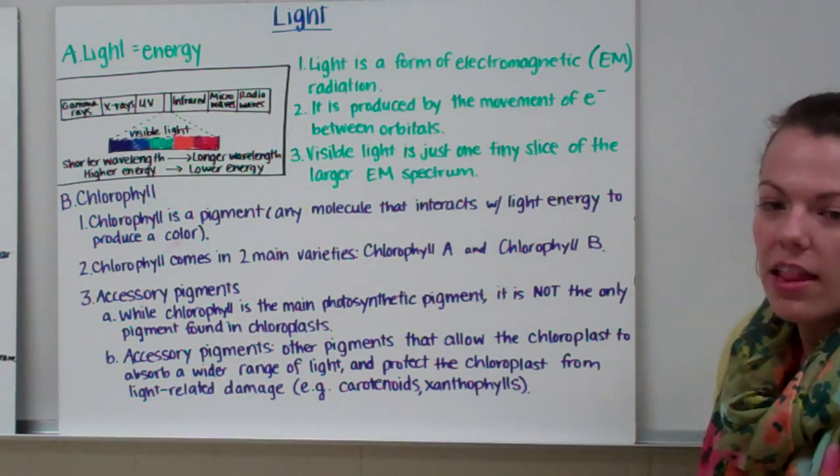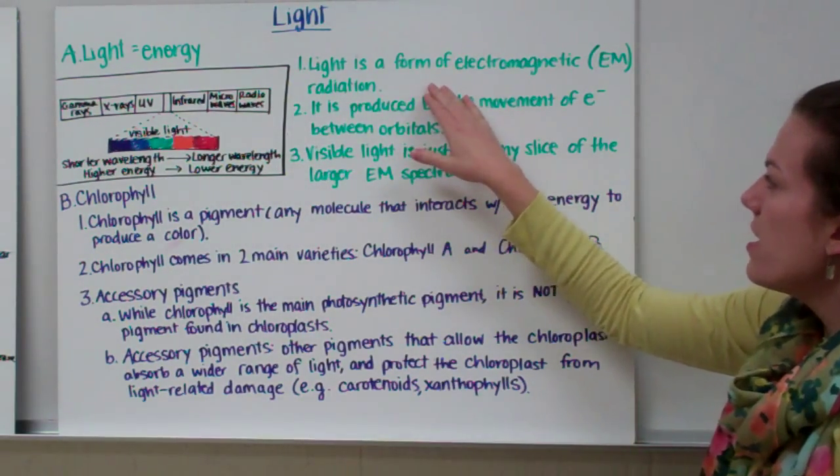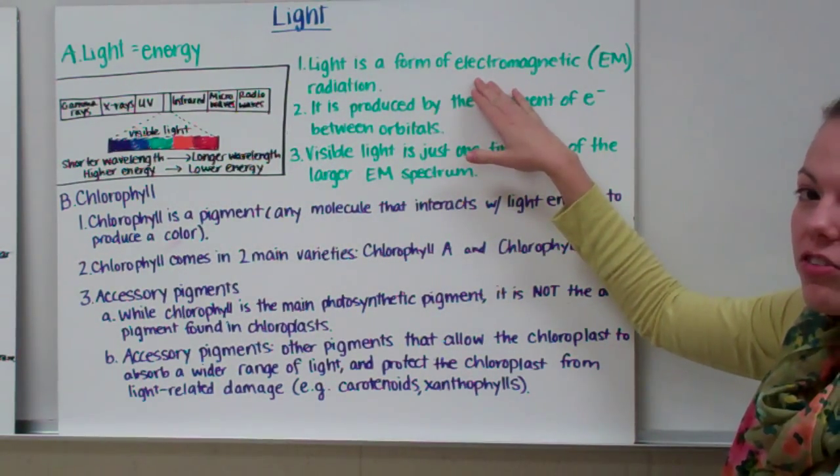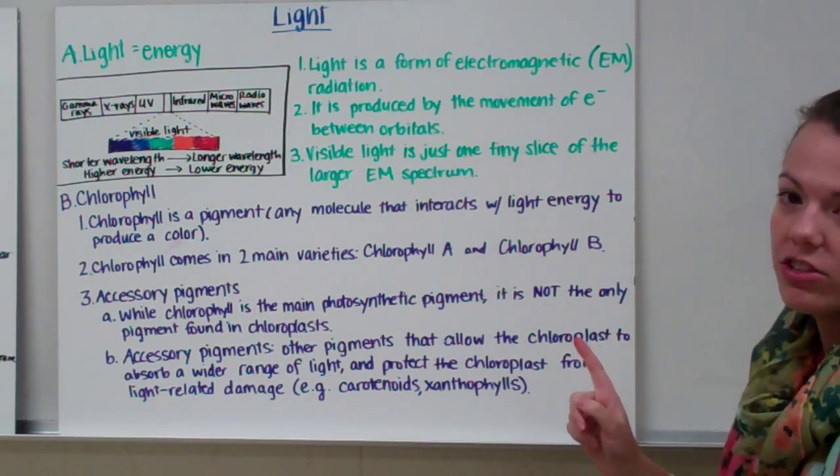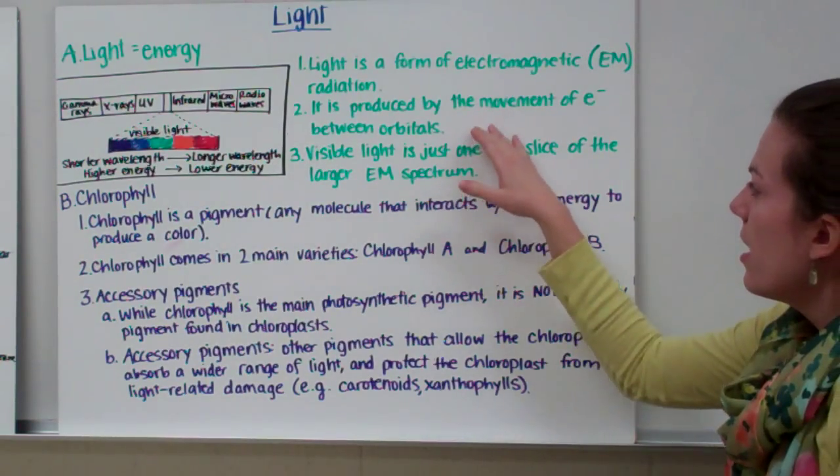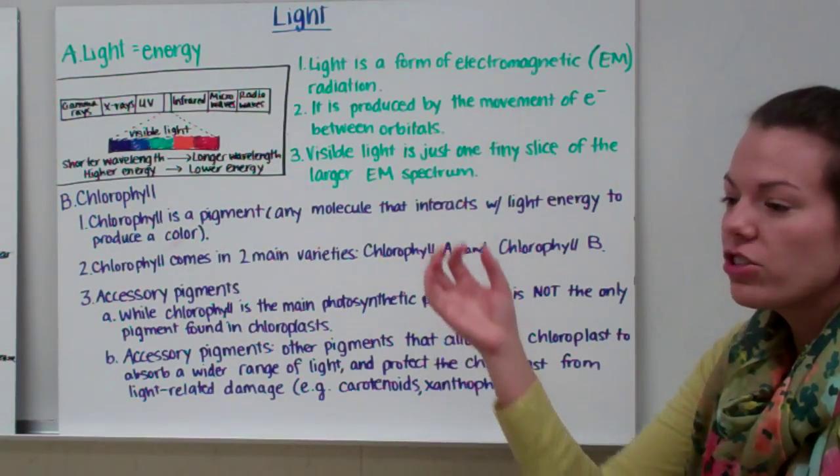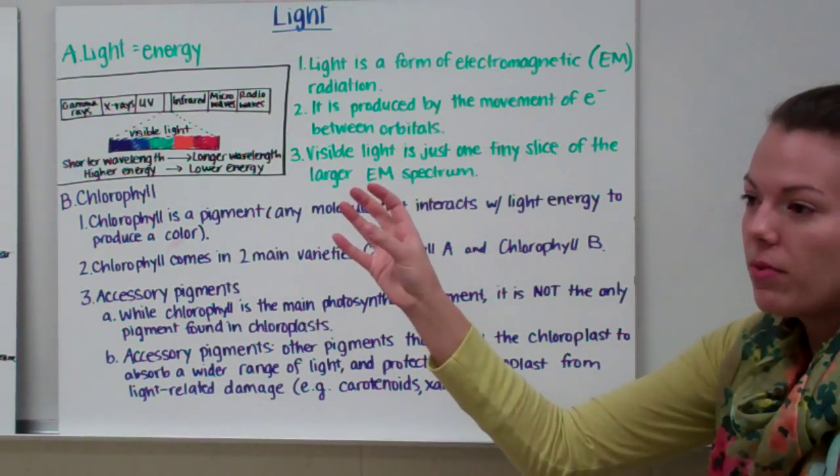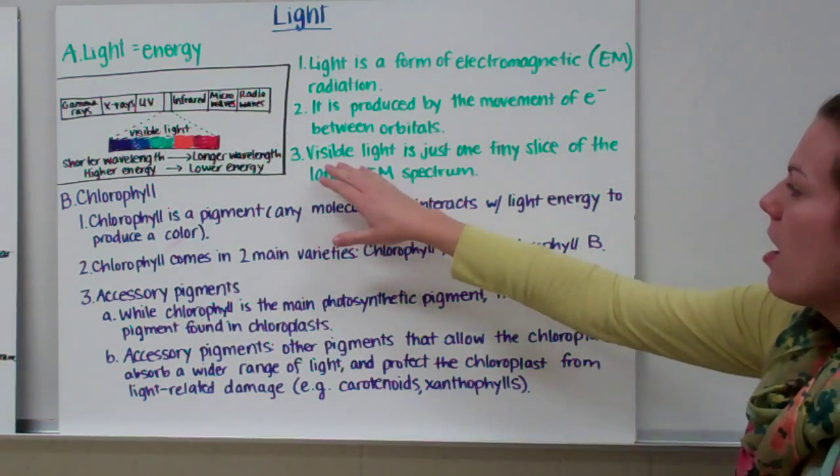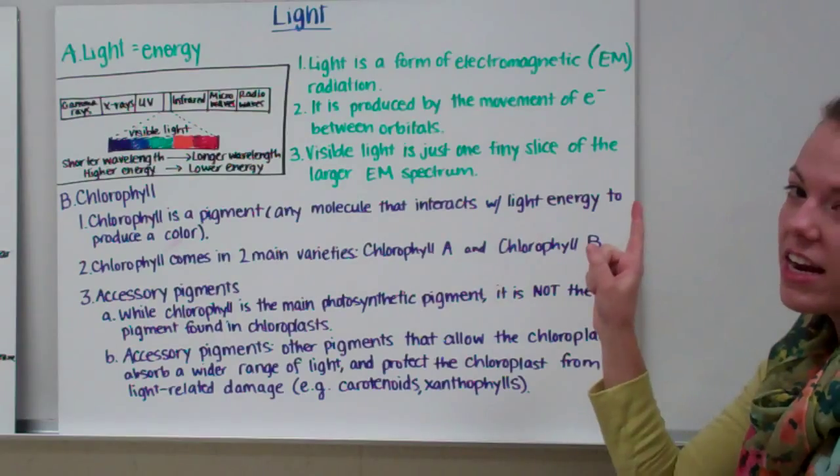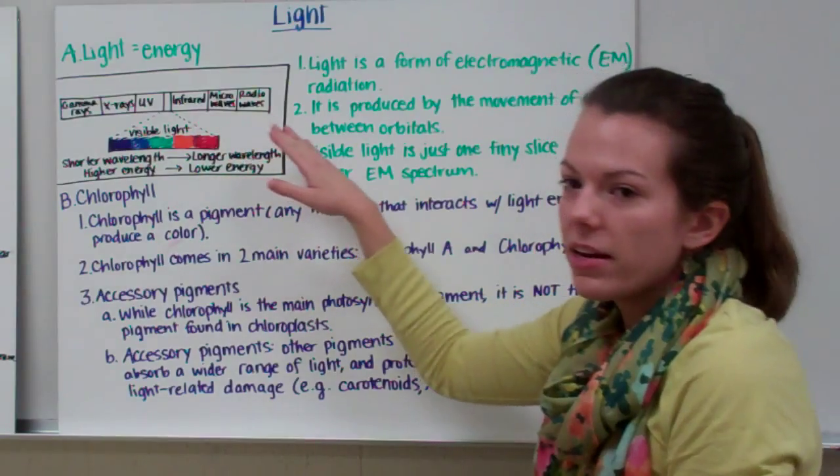Now let's take a closer look at light because it's light that powers photosynthesis. So light equals energy. Light is a form of electromagnetic radiation, abbreviated as EM. It is produced by the movement of electrons between orbitals. So whenever electrons are moving from higher orbitals to lower orbitals, so higher energy to lower energy, they release light.